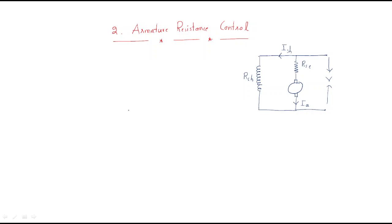Hello everyone. In this session we will discuss about the armature resistance control. This topic is related to the speed control of DC motor — specifically, how we can control the speed of the DC motor by using the armature resistance.